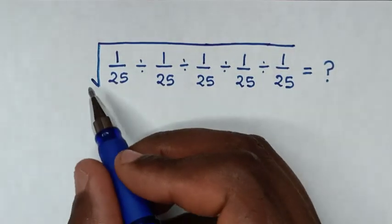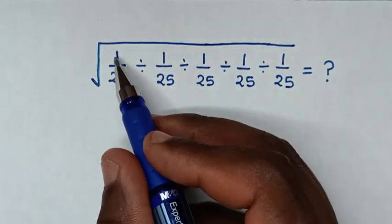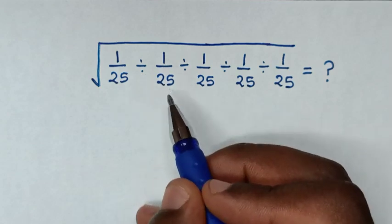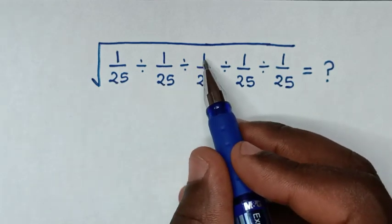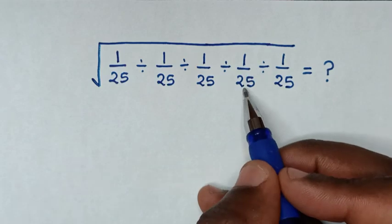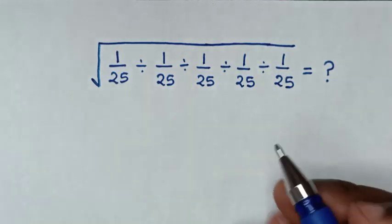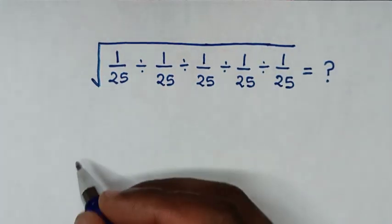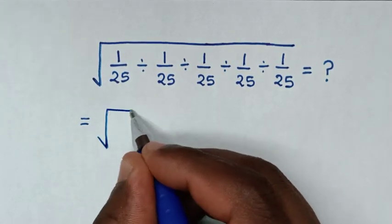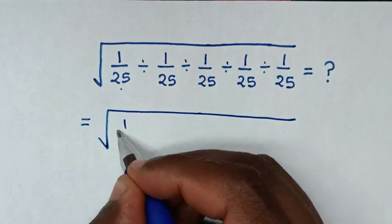Hello. How to solve square root of 1 over 25 divided by 1 over 25 divided by 1 over 25 divided by 1 over 25 divided by 1 over 25. It will be equal to square root of this 1 over 25, then divided by 1 over 25.